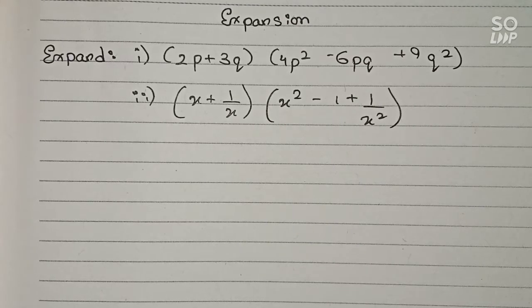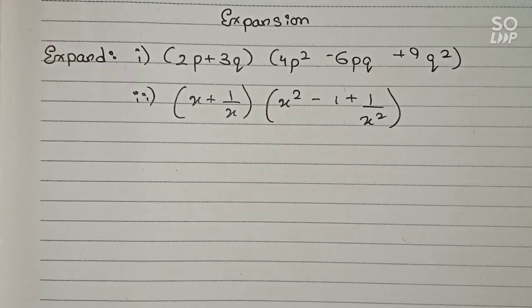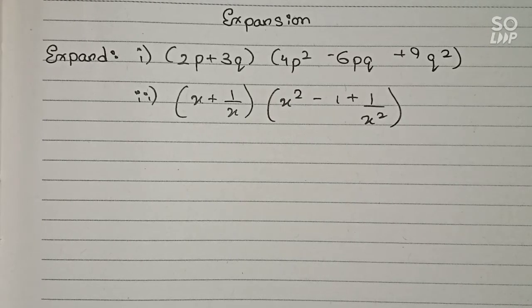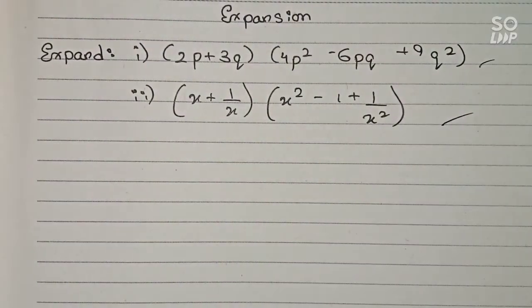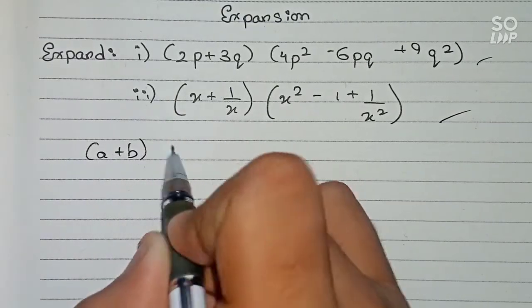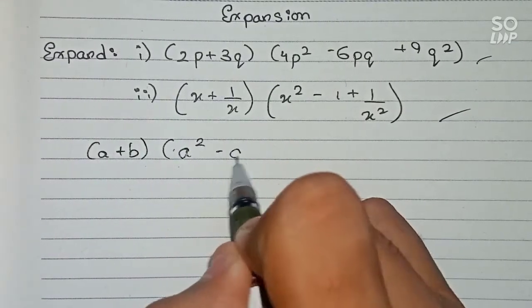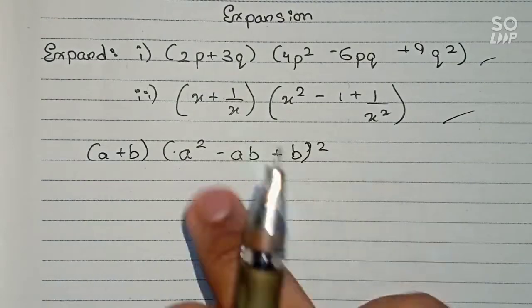Hello guys, welcome to this video. In this video we are going to solve expansion problems. Our questions are: expand (2p + 3q)(4p² - 6pq + 9q²), and (x + 1/x)(x² - 1 + 1/x²). For both these questions we will use a single identity: (a + b)(a² - ab + b²), and we can see that both questions are in this format.